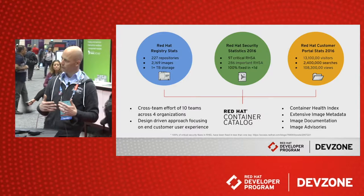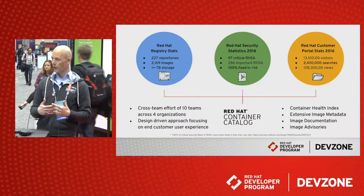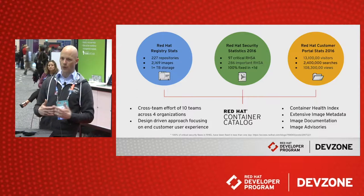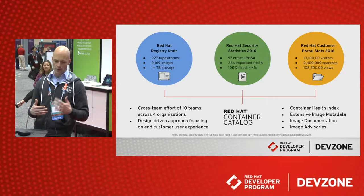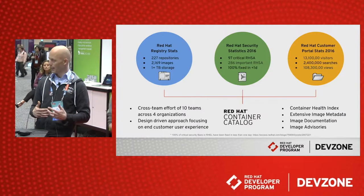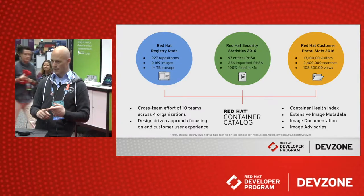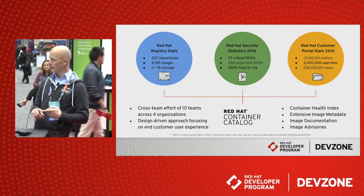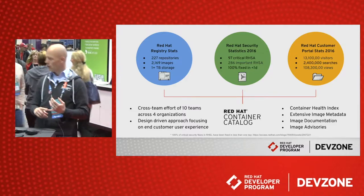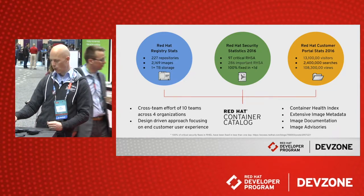This has been the starting point for the Red Hat Container Catalog, which is a cross-team effort. We work with more than 10 different teams across four different organizations in Red Hat. We follow the design-driven model, clearly focusing on user experience. We started long before the final web UI — working on wireframes, user stories, and target personas. The key features of the Red Hat Container Catalog are the Container Health Index, for which we made a press release earlier today, extensive image and repository metadata, automatically added image documentation, and leveraging our Red Hat advisories.